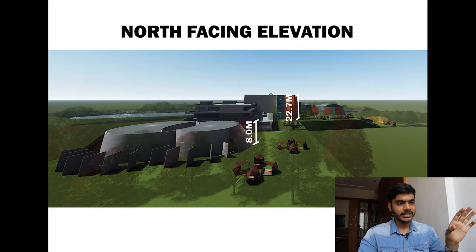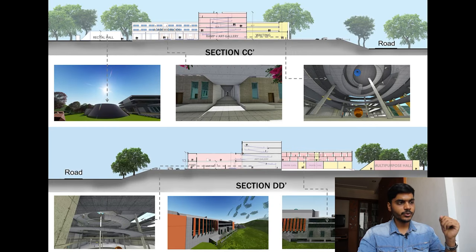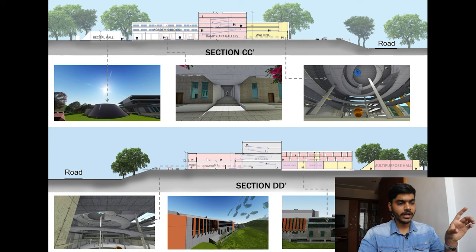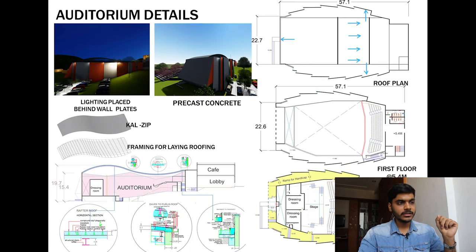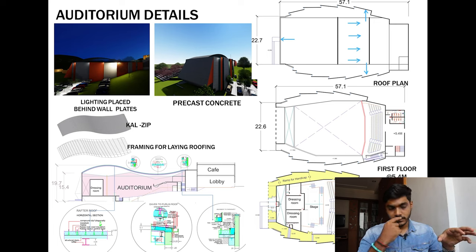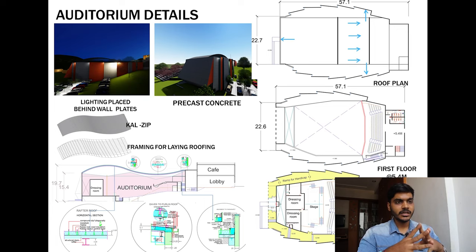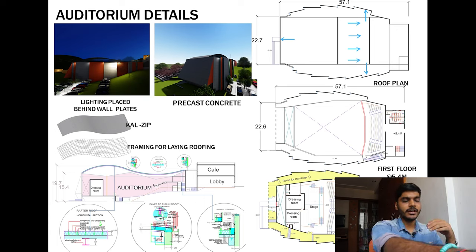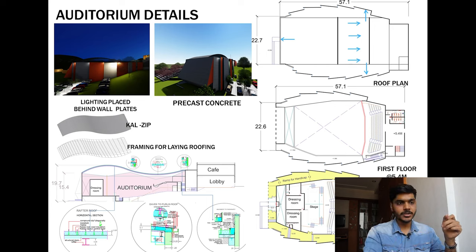We have Section CC with a recital hall on the left, then academic blocks, then a ramp and art gallery. Section BD has the ramp, multi-purpose halls. Next are the auditorium details — I used Carl Zip, which is a very flexible material used for flowy formworks — that's how I created this design. These are the details for the auditorium. I've also detailed how water will flow, which I learned at an internship. Then there is the first floor and the ground floor.